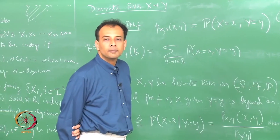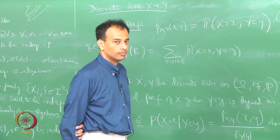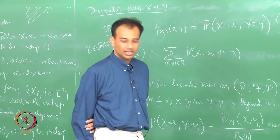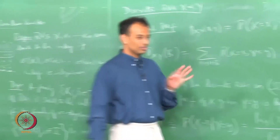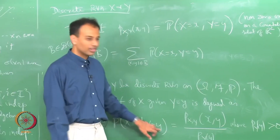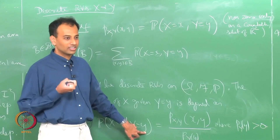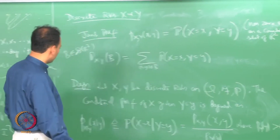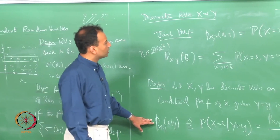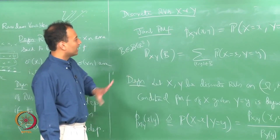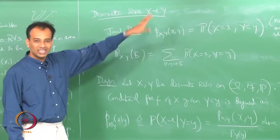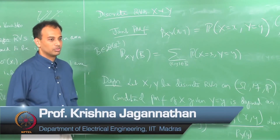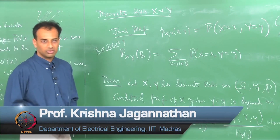Is the definition clear? In the continuous or singular case this gets messy because you cannot condition on a singleton — it has probability zero. But in the discrete case there is no problem; this is very elementary. So we have defined the conditional PMF, and now we will move on to characterizing discrete random variables and looking at independence of discrete random variables. You can get some characterization in terms of PMFs and conditional PMFs for independent discrete random variables, which we will do next class.